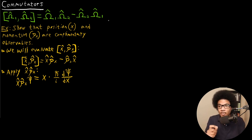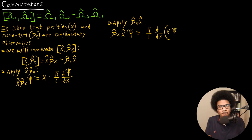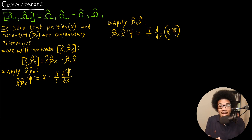Now, what happens when we apply the operators in the opposite order? When we flip these — applying the position operator first, then momentum operator — we again apply these to some trial wave function psi. We'll have H-bar over i on the outside, but now the derivative is being taken of x times psi. Since psi is a function of x, we have to use the product rule in this case.